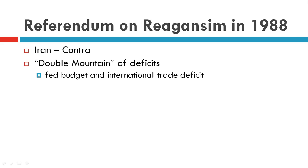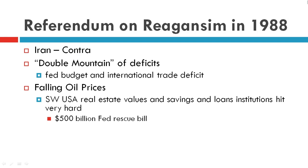Some of the issues that gave the Democrats leverage in 1988: first, Iran-Contra; and second, the double burden of deficits, including the federal budget deficit and the international trade deficit.